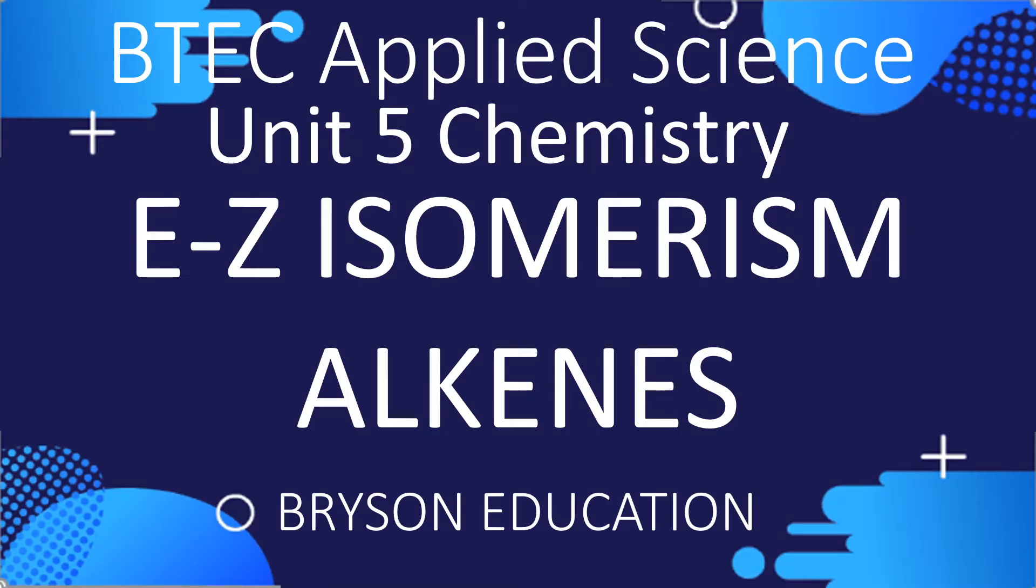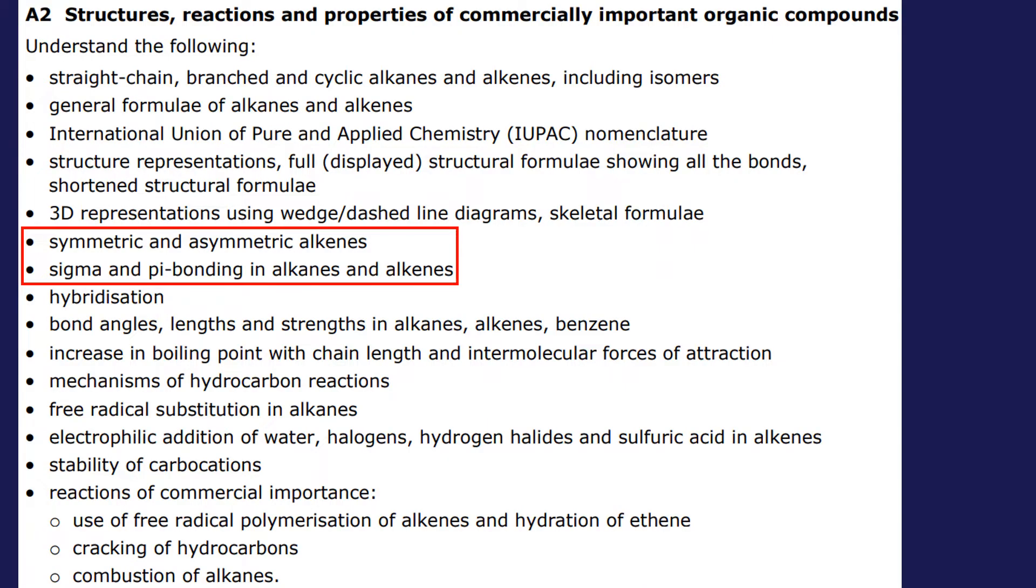Hi there, welcome to my channel on chemistry lessons. This is BTEC Applied Science Unit 5 Chemistry, and it's going to look at E/Z isomerism in alkenes. In terms of the specification, this is learning aim A2 as part of the organic chemistry. It fits under the symmetric and asymmetric alkenes. We will cover some sigma and pi bonding, but you will see this in more detail with hybridization in the next video.